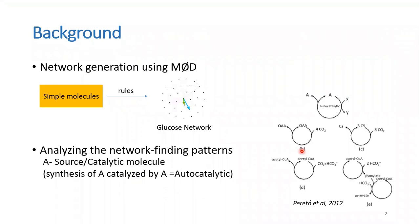This project is in continuation to what last year's YSPs did. They started with very simple molecules and generated a complex network of glucose. Then they tried to find various patterns within it, and the one they were interested in was autocatalytic cycles.